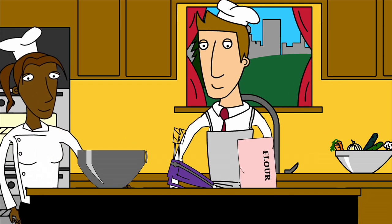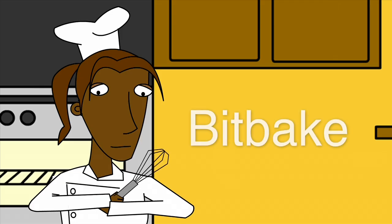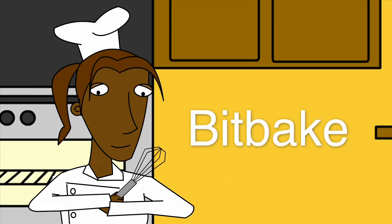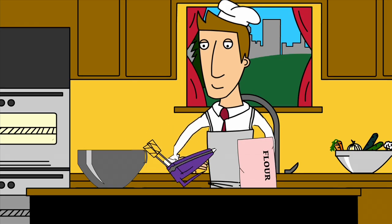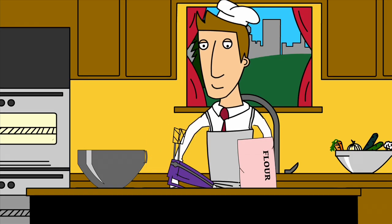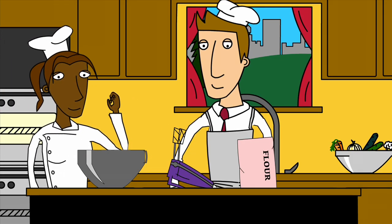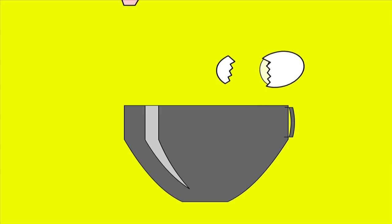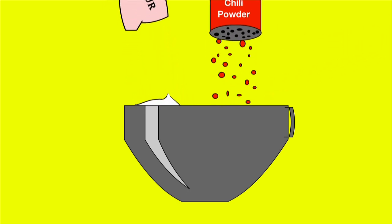Like any great chef, you should have a sous chef to help you out, and in this case you do have one named BitBake. BitBake is a program that will read the recipe, assemble the ingredients, and start baking. By using TI scripts to set up your kitchen and BitBake to handle the cooking, you can now focus on what makes your recipe special — your own secret ingredient.